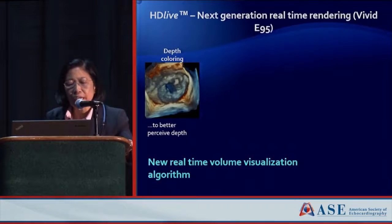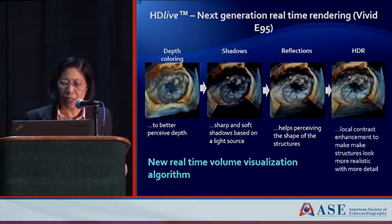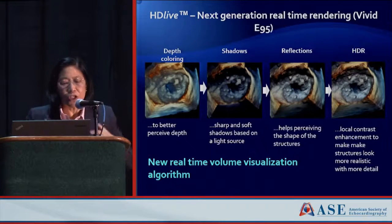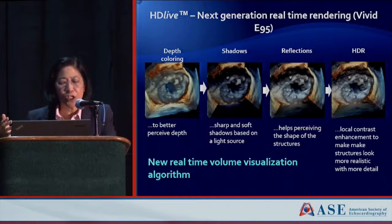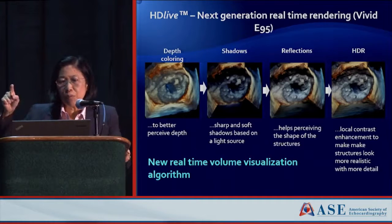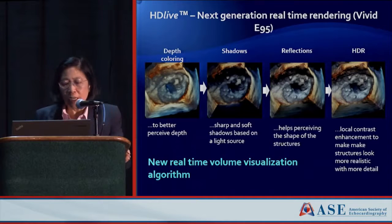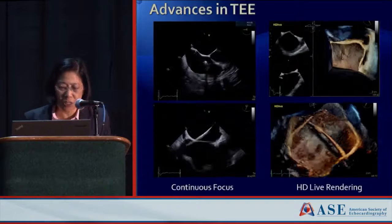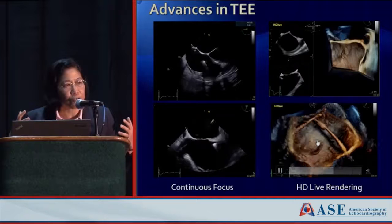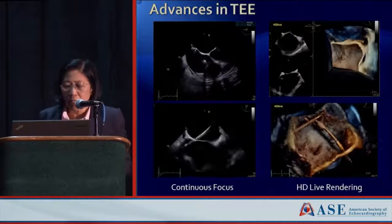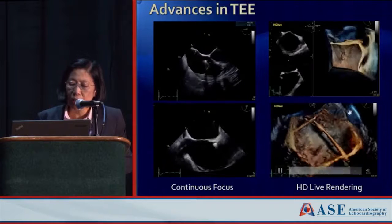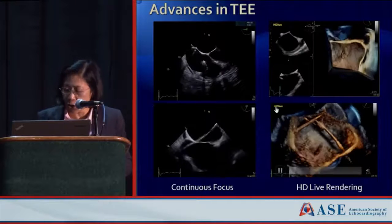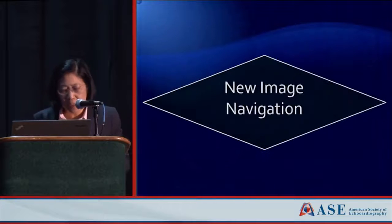HD Live is just fascinating. Because you can look at a pixel from multiple different views within the volume, you can change the depth coloring, shadowing, reflections, and light source — pretending the light comes from the left, right, above, or below. All of these things change how we see structures within the volume. It will help us look at catheters and defects differently. Here the light source is coming from the upper right-hand corner, but you could change it to the other side and the shadow would shift — all enabled by the software beamformer.